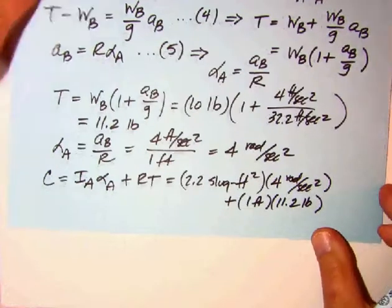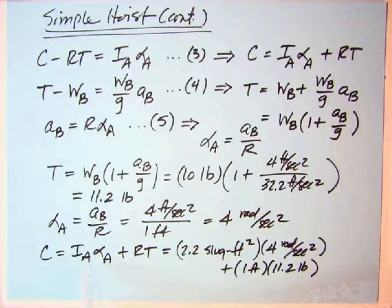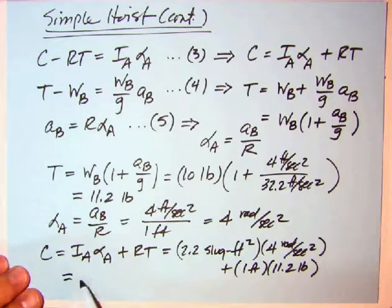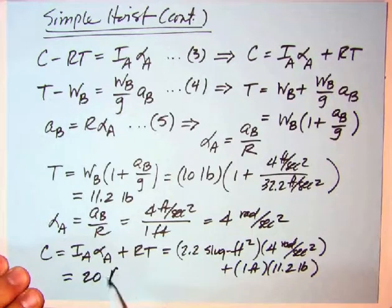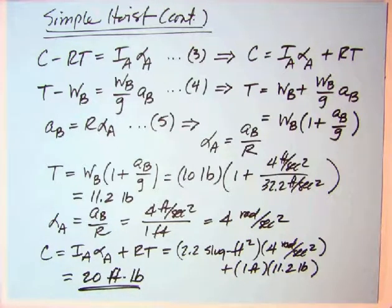We've had C is I times alpha plus RT, 2.2 slug foot squared times four radians per second squared. Well, you've got a slug foot per second squared, which is a pound, left another foot. So you've got foot pounds there. And then, we've got one times 11.2. So essentially, this comes out to be 8.8 plus 11.2. And surprising, I don't know how I did this, came out to be about 20 foot pounds here. Right on about 20 foot pounds. And from there, you could then size the motor for its initial torque and then the other criteria for this simple hoist or winch.